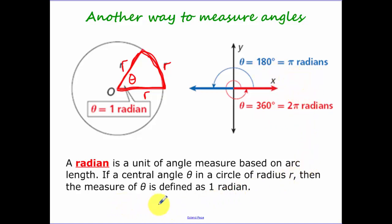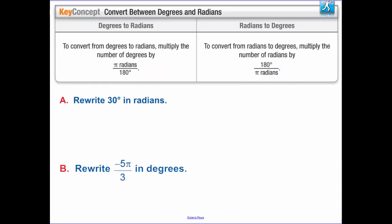So a radian is a unit of angle measured based on the arc length. If the central angle theta in a circle of radius r, so all my radii are r, then theta is defined as one radian when this arc length is also r.